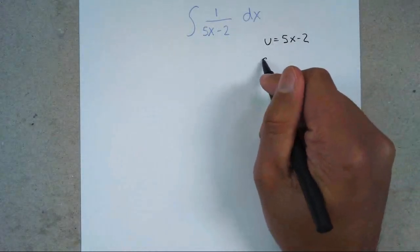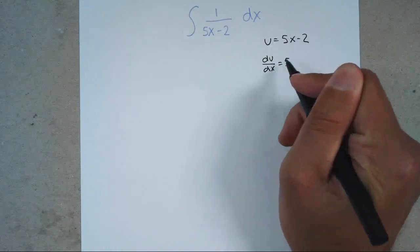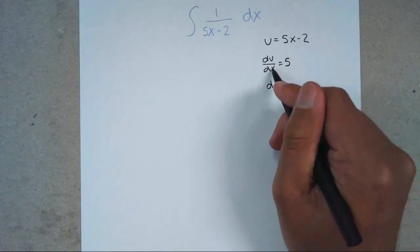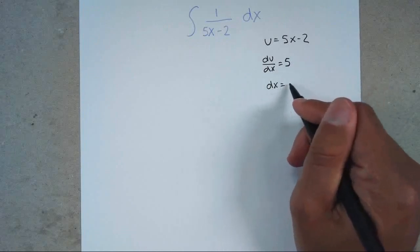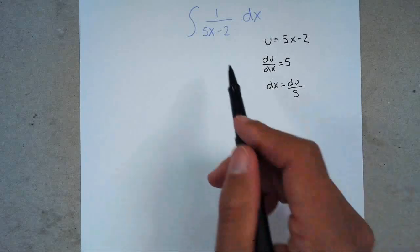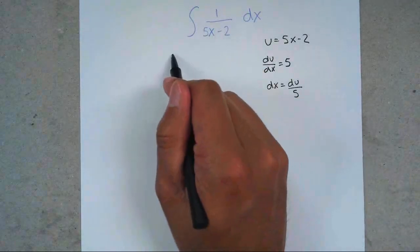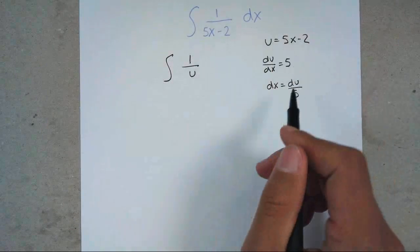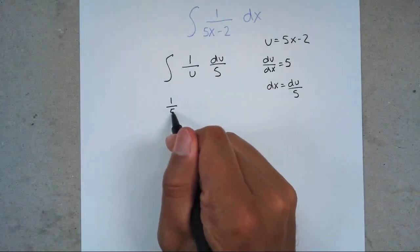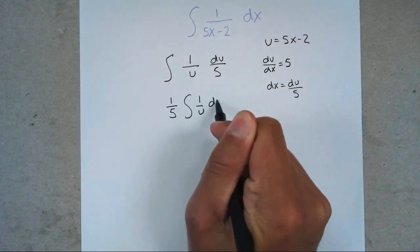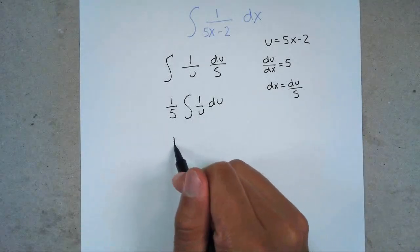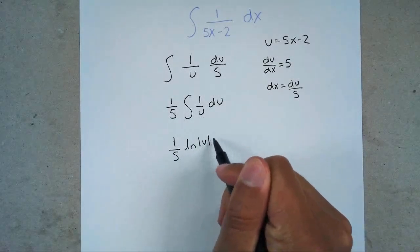Then I'm going to go ahead and find the derivative of u. du over dx equals 5. My goal is to get dx alone, so there's a general rule that you're allowed to just switch these two, so you get dx equals du over 5. Now I already substituted 5x minus 2 for u, so this problem becomes 1 over u, and instead of dx, I plug in du over 5. I'll pull that 5 out front: 1 over 5 times the integral of 1 over u du. The anti-derivative of 1 over u is always ln, so this equation becomes (1/5) ln absolute value of u plus C.